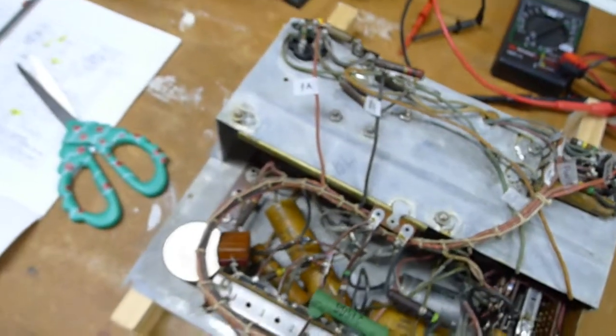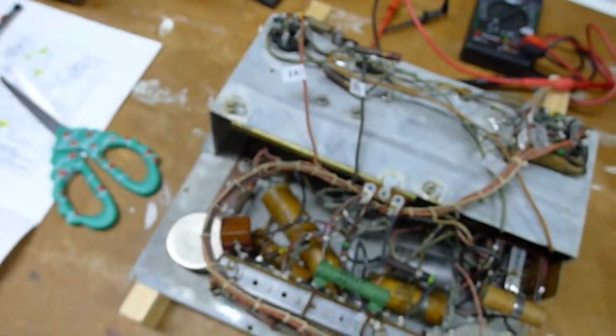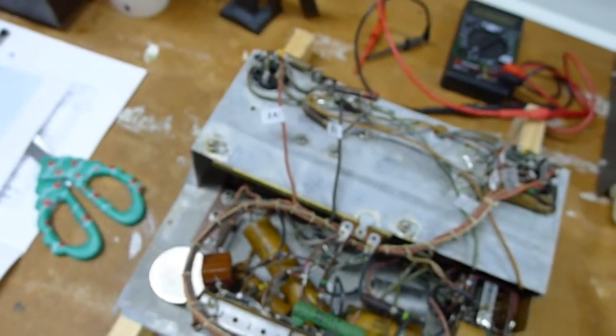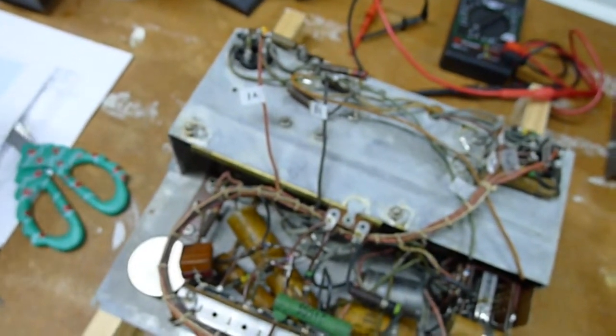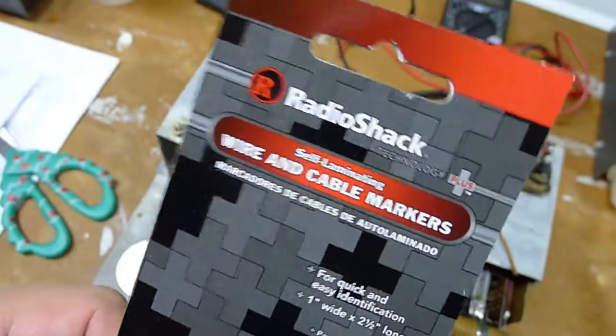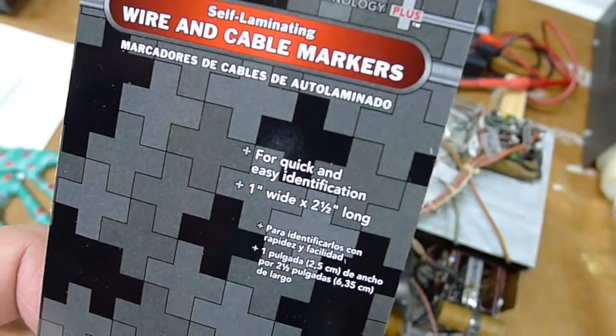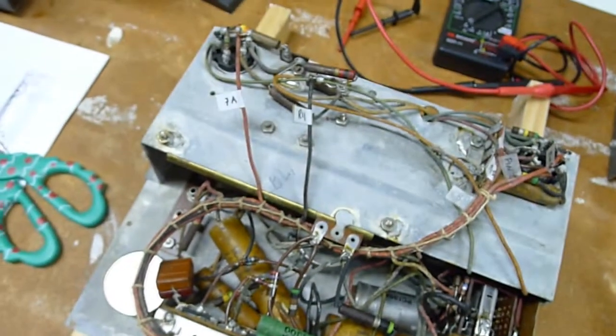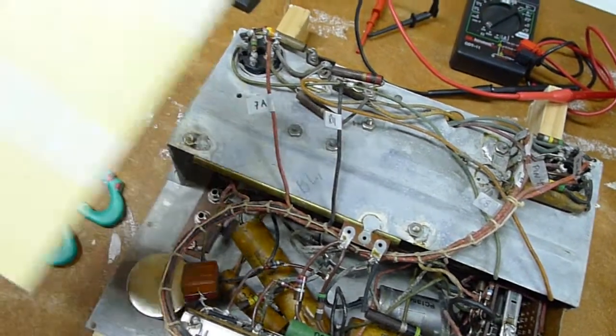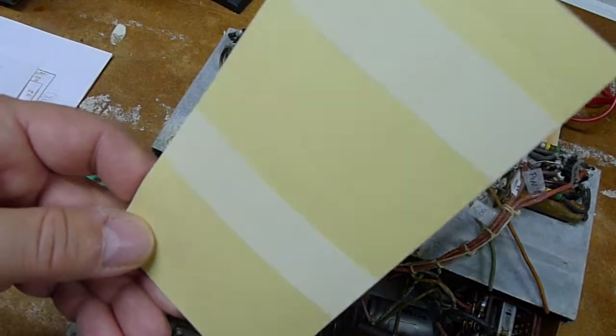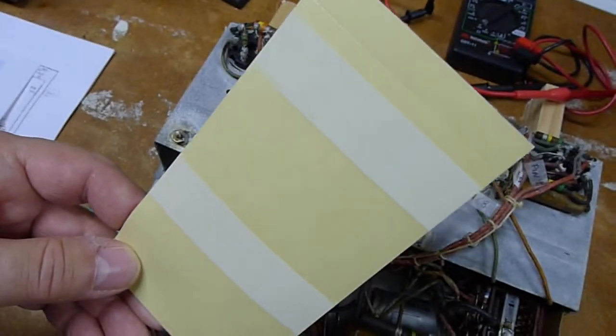What I did was I went down to Radio Shack. I didn't have any labeling tape, I was just tired of trying to find something to label with, so I went down and bought some of these wire and cable markers, which I really don't like. They came in sheets like this.